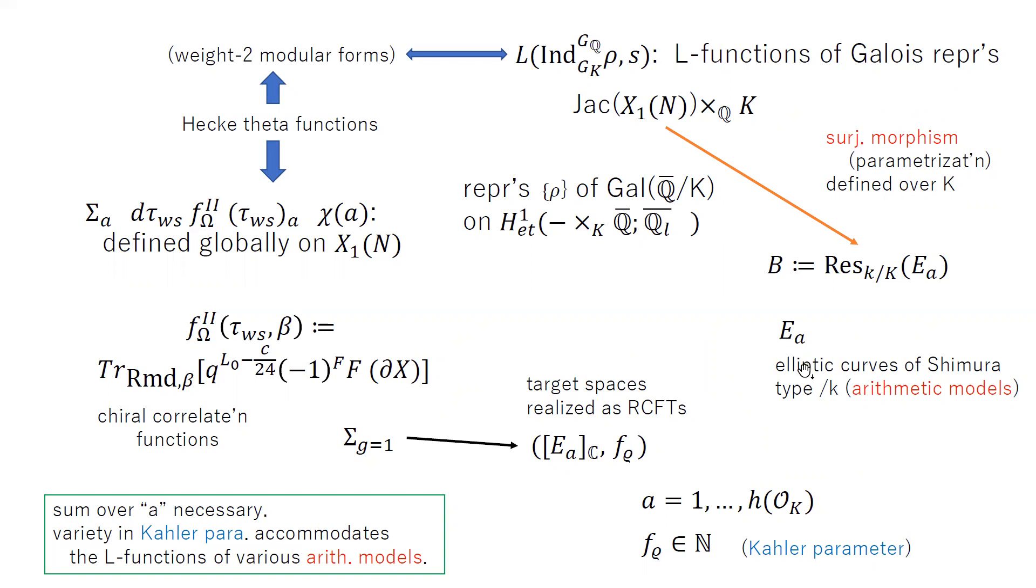So let's think of the elliptic curves of Shimura type here, and then we can construct the representation of the Galois group over the field of imaginary quadratic field of complex multiplication. And furthermore, we can think of the induced representation of the Galois group of the field of rational numbers G_Q.